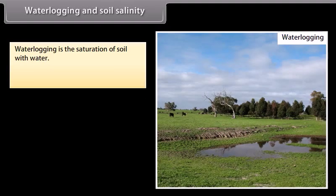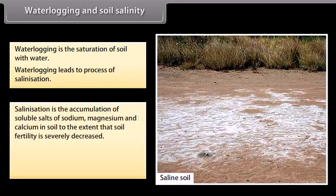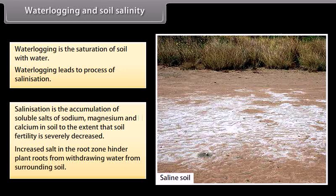Waterlogging and Soil Salinity: waterlogging is the saturation of soil with water. Waterlogging leads to the process of salinization. Salinization is the accumulation of soluble salts of sodium, magnesium, and calcium in soil to the extent that soil fertility is severely decreased. Increased salt in the root zone hinders plant roots from drawing water from surrounding soil.